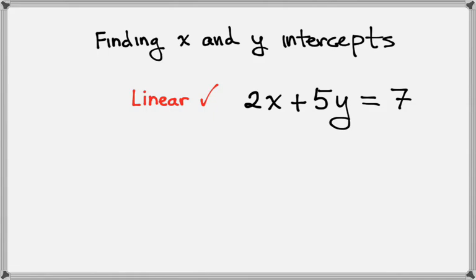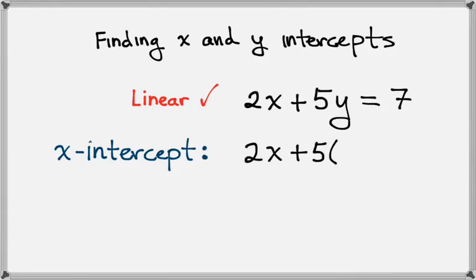Next what we want to do is find the x intercept. We do this by setting y equals 0 in this equation. So here we go. We'll take 2x plus 5 and now we'll set y equal to 0. And on the right hand side we'll still have 7.